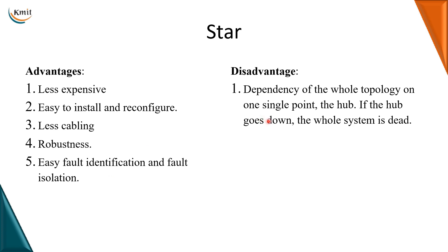But the main disadvantage of the star topology is that the dependency of the star topology is completely on one single point, and that is the hub. If the hub fails, the whole system will be dead. The best example of star topology is the LAN connections, which we make using the star topology only.